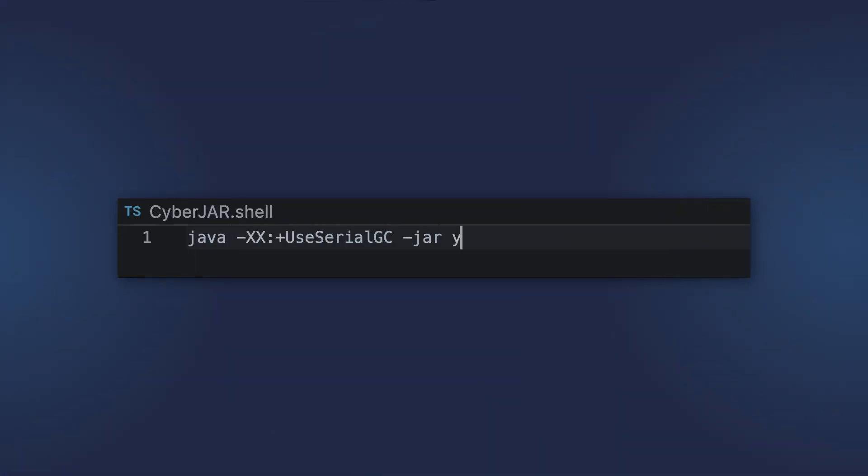SerialGC is the simplest and the oldest collector in Java. It works in one thread and freezes all application threads while performing the collection. It is good for single-threaded client-side applications that don't require extra small pause times. Note that if you limit your application to 2 GB of RAM and fewer than 2 processors, SerialGC is enabled by default even if you explicitly enable another collector, so be careful about that.